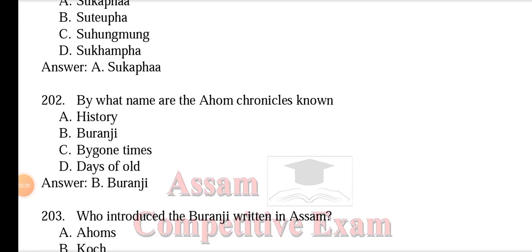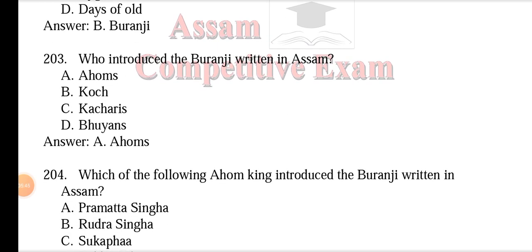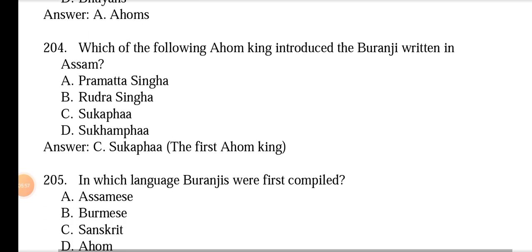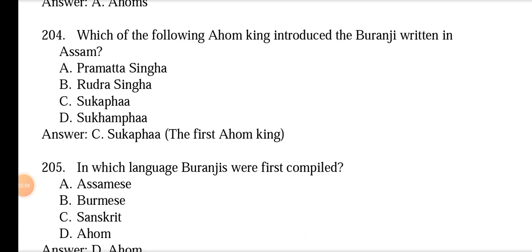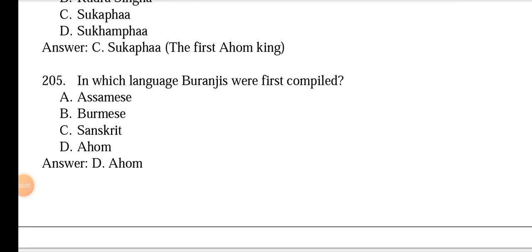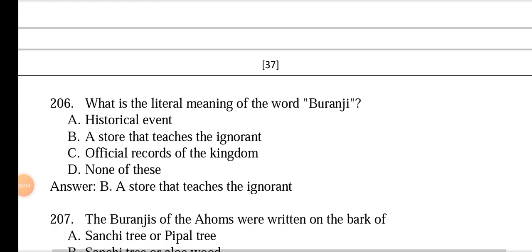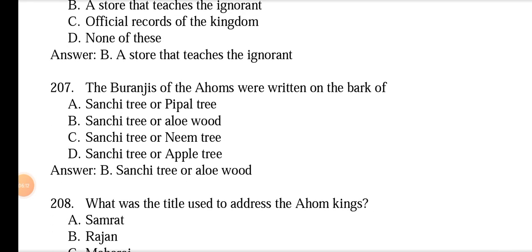The Ahom chronicles are known as Buranji. It was the Ahoms who introduced the tradition of writing Buranjis in Assam. Sukafa, the first Ahom king, introduced Buranji writing. The Buranjis were first compiled in the Ahom language. The literal meaning of the word 'Buranji' is 'a story that teaches the ignorant.' The Buranjis were written on the bark of the Sanchi tree or alloy wood.